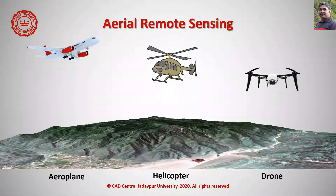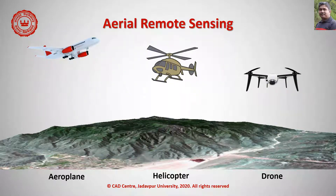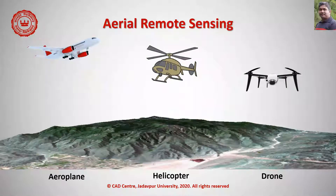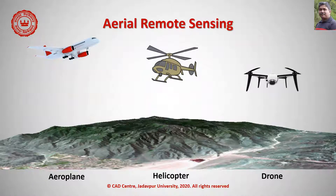Beyond classic aerial photogrammetric techniques, aerial remote sensing is now widely used for hyperspectral, thermal, and LiDAR data collection from aeroplanes. Drones are a new addition to remote sensing that can capture optical, thermal, and LiDAR data from low altitude with a greater level of detail. LiDAR can provide a 3D point cloud, which is perhaps the most advanced data included in GIS. A 3D point cloud can also be created by traditional photogrammetry and by processing optical drone images.